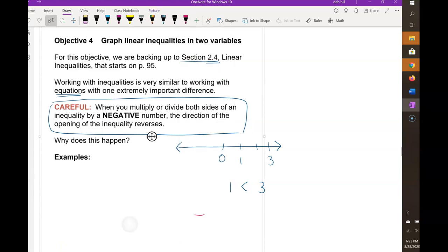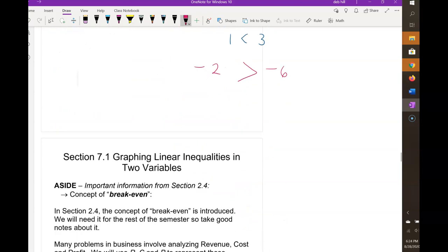Then I'm going to have negative 2 on the left hand side and negative 6 on the right hand side. Now you can see, because we're to the left of 0, numbers to the right are larger because they're closer to 0. So the direction of the inequality has to be reversed in order to write a true statement. It's not just a rule, it's because this is what happens when you multiply or divide by a negative number. You have to keep your statement true by reversing the direction of the opening of the inequality.